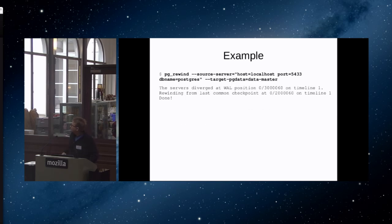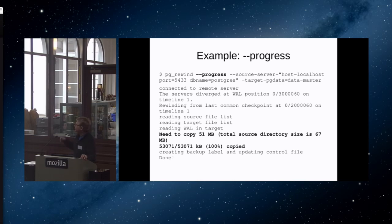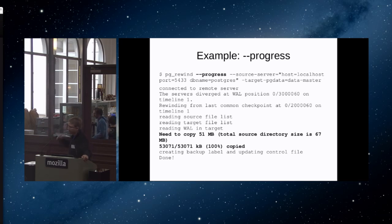Here's an example: the old master's data directory is called 'datamaster', and I'm pointing pg_rewind to a server running on the same system but a different port. It will give you output showing where the failover happened and then start copying. You can also get progress reports showing how much it has left to copy and how much it needs to copy in total. In this case you can see it was a tiny data directory — only 67 megabytes — so there wasn't much point in using pg_rewind here. But if it were tens of gigabytes, it would be very nice to only copy the difference.